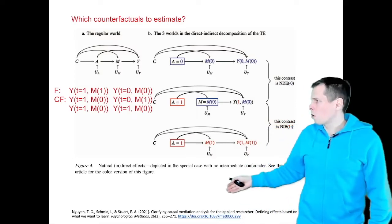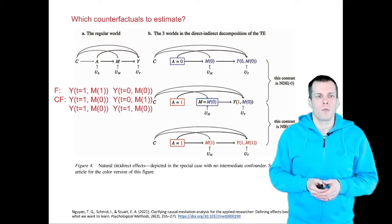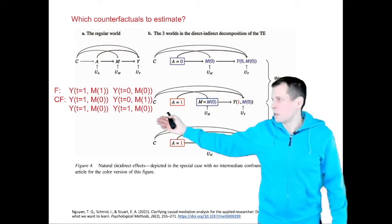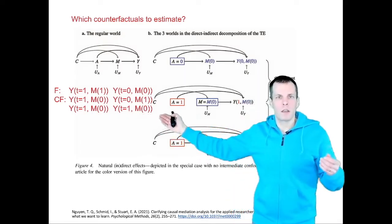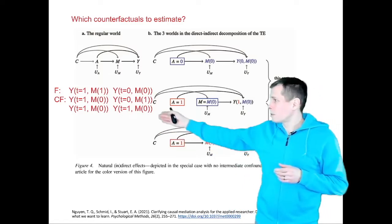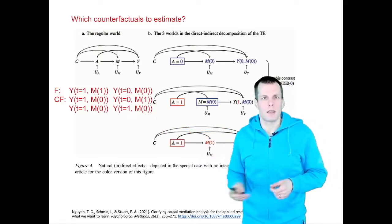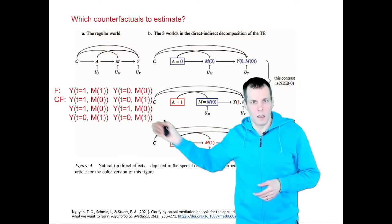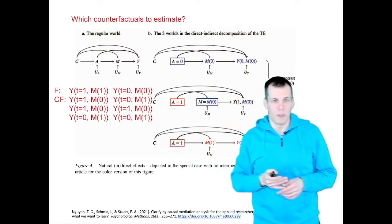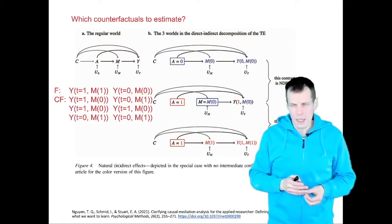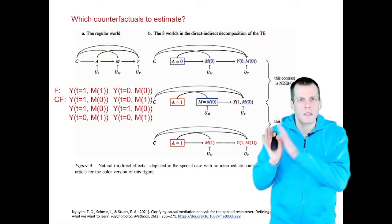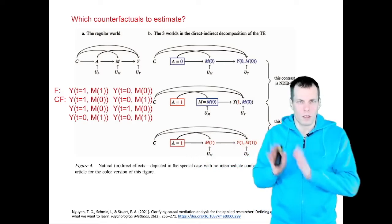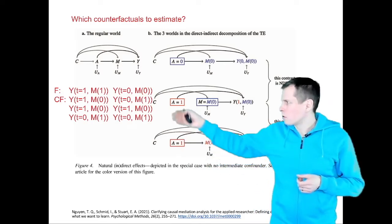Nguyen's paper discusses the option of changing the mediator while adjusting the treatment so that all cases are either treated or untreated but all observe the mediator. These are different counterfactual specifications. Nguyen's paper on this decision is worth checking out, as is my explanation on how to choose between these approaches in another video.